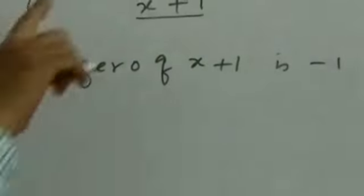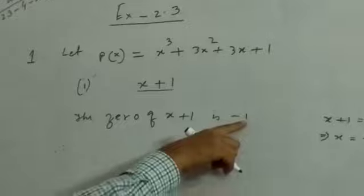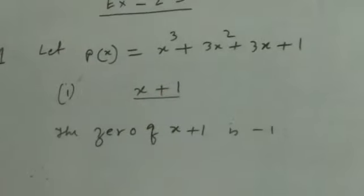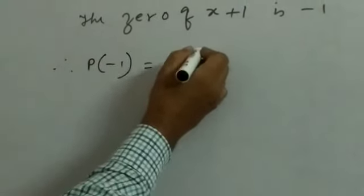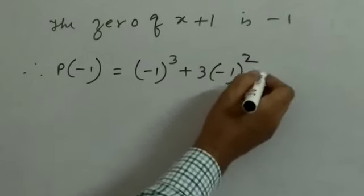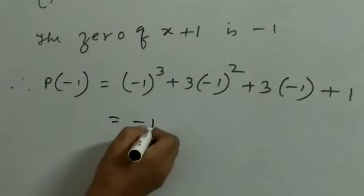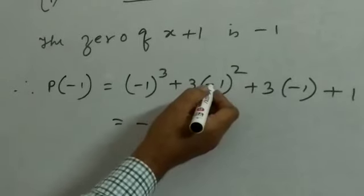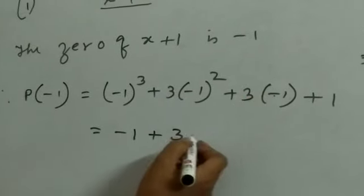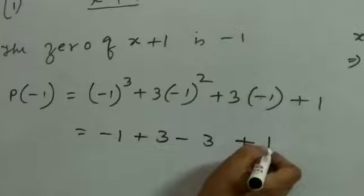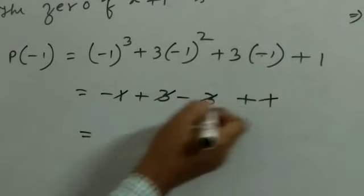Now we will find the value of this polynomial at x equal to minus 1. So P(−1) equals: (−1)³ + 3×(−1)² + 3×(−1) + 1. Simplify: here minus 1. Don't multiply directly — first find the square of this term. (−1)² is 1, 1 into 3 is 3. Here directly remove the bracket: plus minus minus 3, and plus 1. Now simplify: adding and subtracting, these terms cancel and the result is 0.